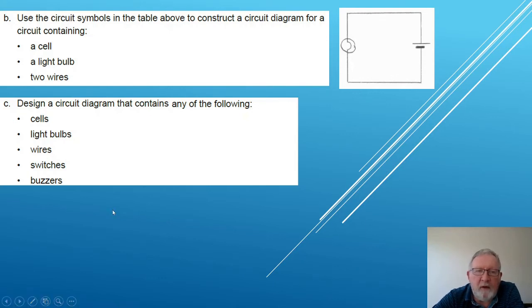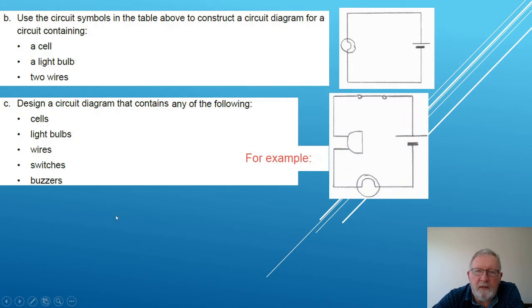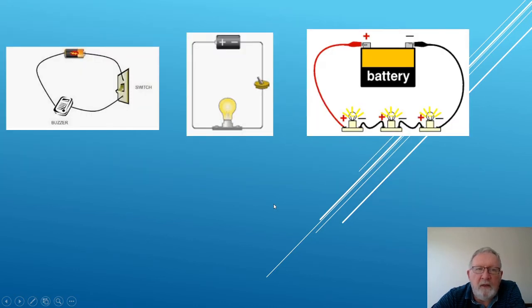And here's an example of one that you may have drawn. This particular one has a closed switch, the power source, the light bulb, and that symbol for a buzzer. It only has one of each of those things there, but of course connected by wires.